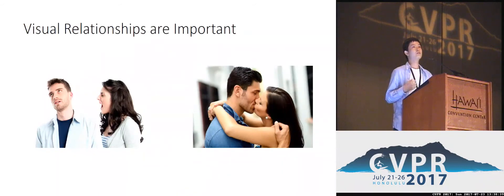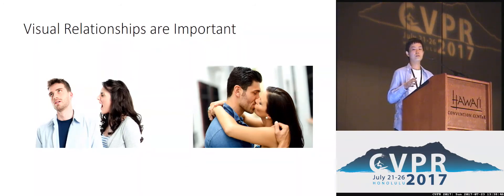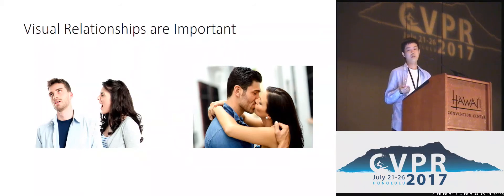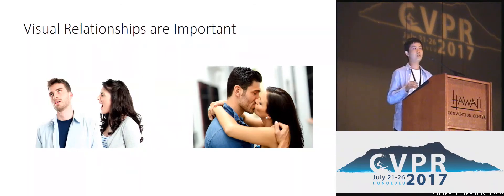When we understand images, it is not enough to understand only the objects. Visual relationships are also important. Visual relationships refer to the mutual states of two pairs of objects. As shown in this slide, these two images both contain the same objects, namely a man and a woman, but their semantics are completely different due to their interactions, namely arguing and kissing.